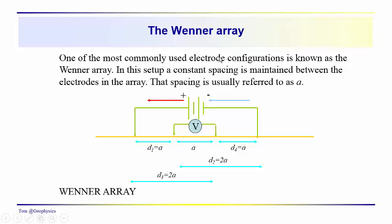Last time we developed an expression for the geometrical factor associated with an array we're calling the Wenner Array. It was very commonly used for a long time when we had simpler resistivity meters with two source and sink electrodes and two electrodes to measure potential difference. The Wenner Array has a fairly simple geometry where the source-to-potential electrode distance, the distance between the potential electrodes, and the distance from the potential electrode to the sink are all equal to a.